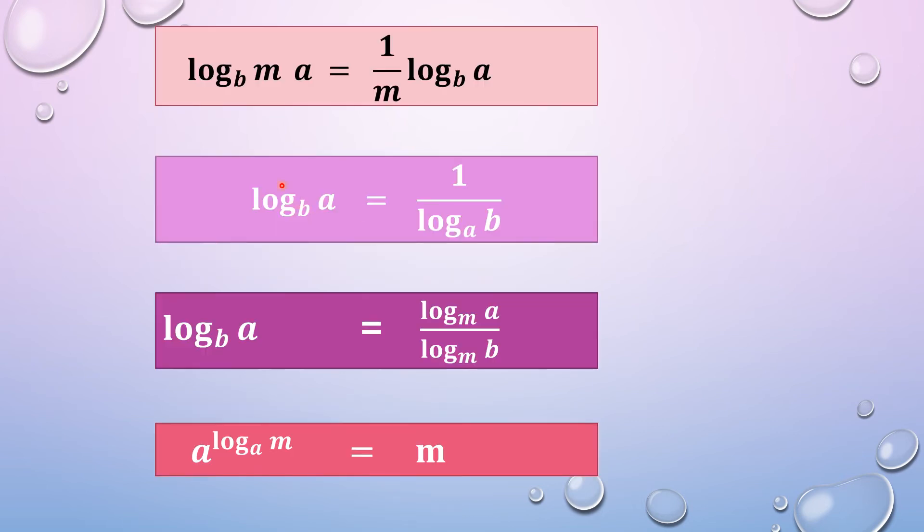Next, this is log of a and the base is b to the power m. Then the answer will be 1 upon m log of a to the base b. Initially this base will remain the same. If m is written out here, it will come in the right-hand side in the denominator.